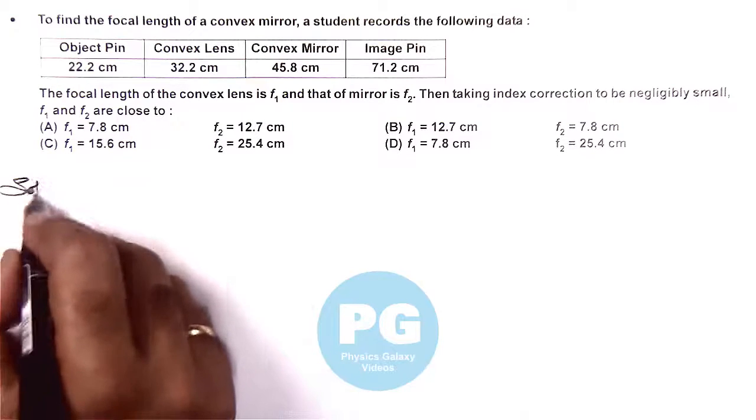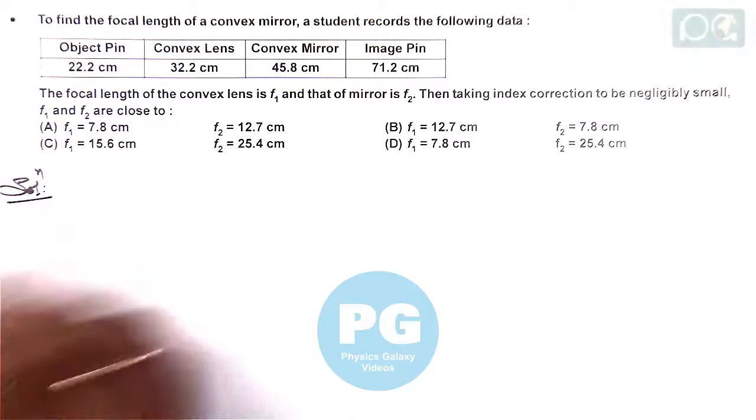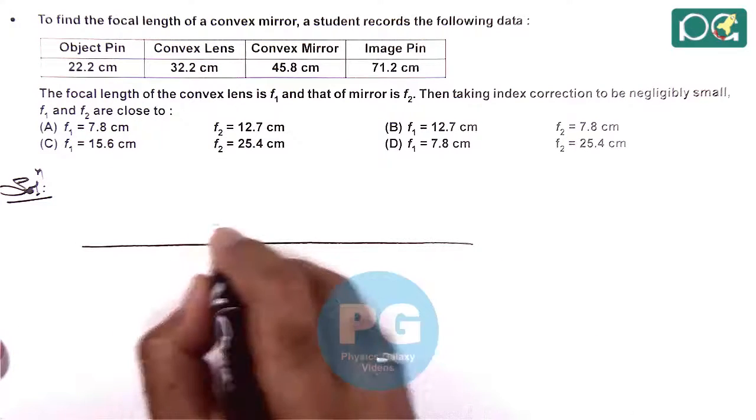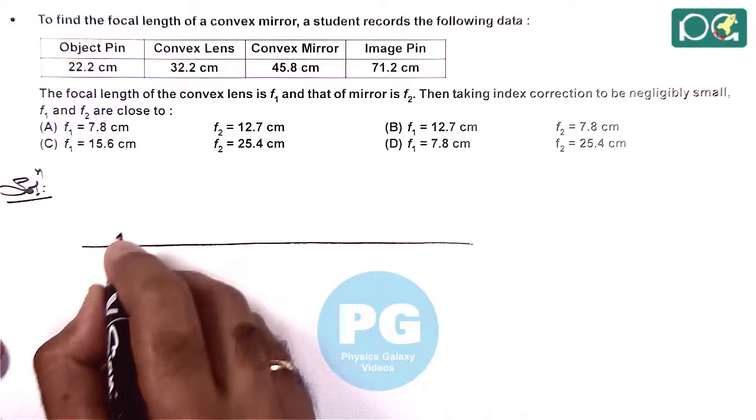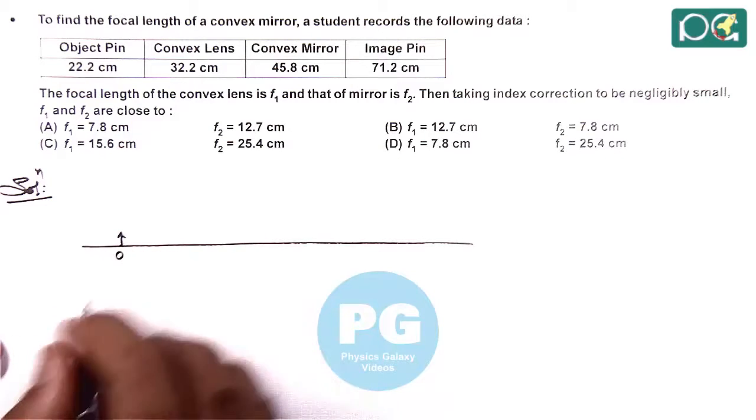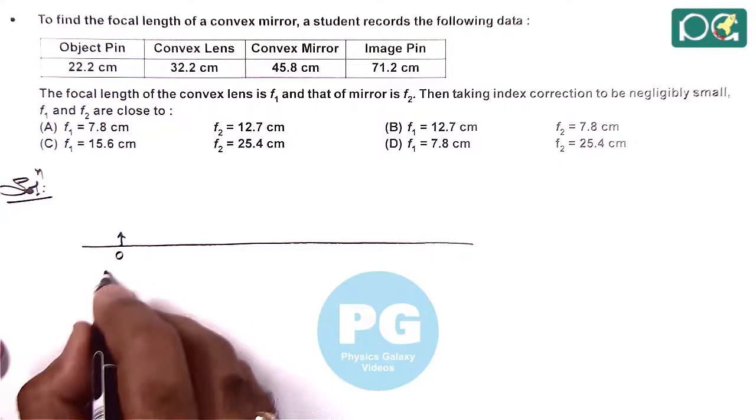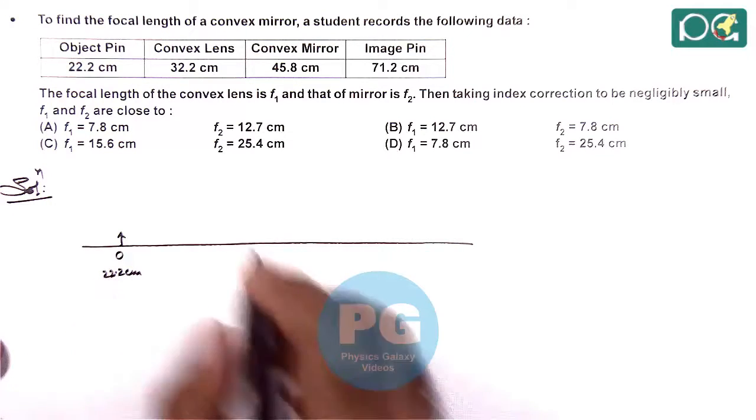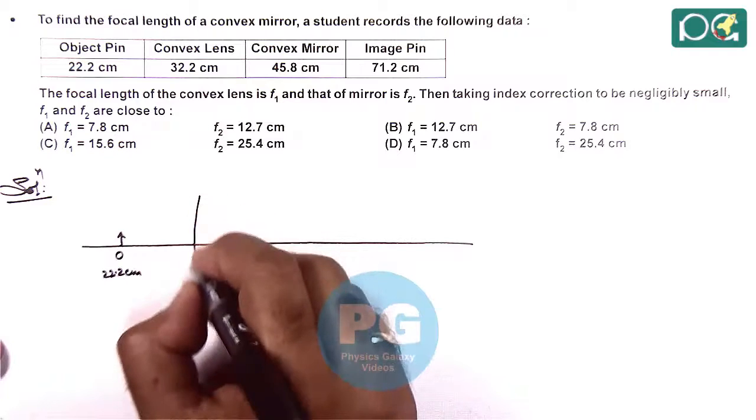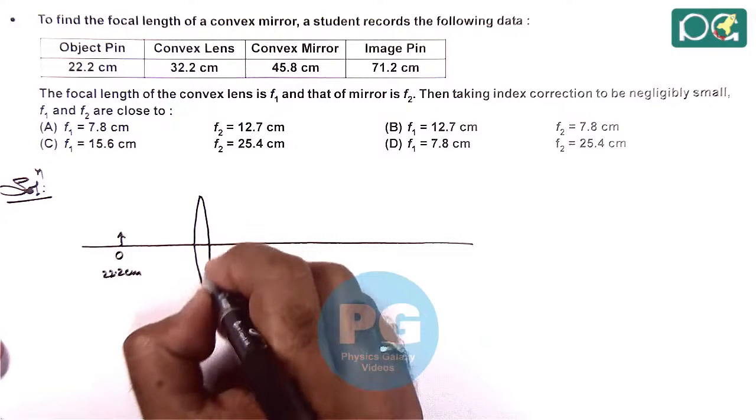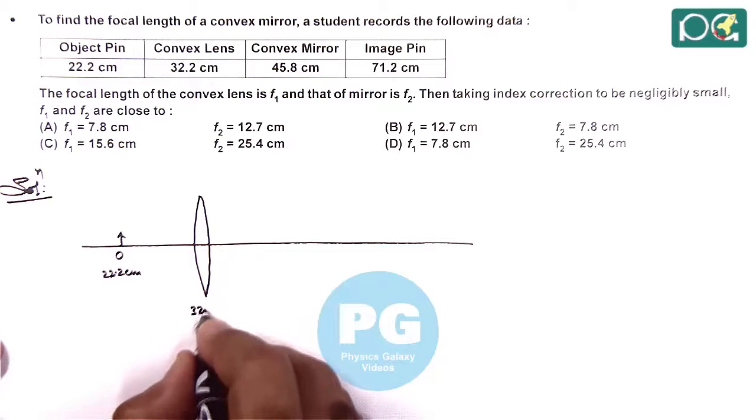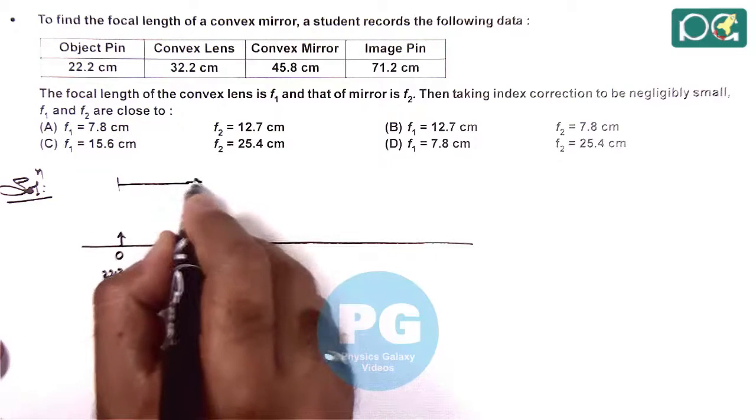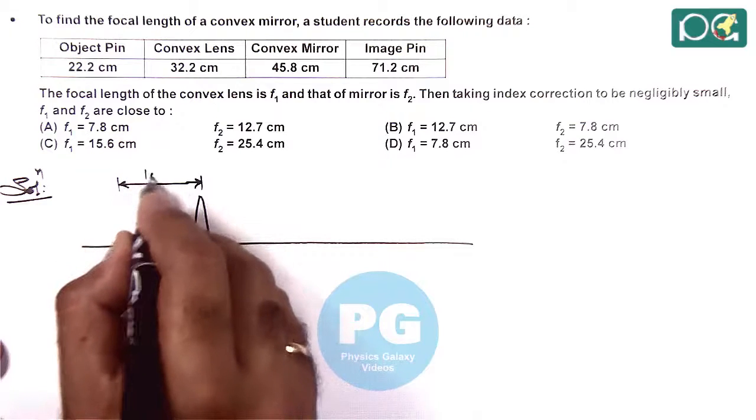First, we try to visualize the situation on the optical bench. We are given that object pin is obtained at the location of 22.2 centimeter, then convex lens is placed at the location of 32.2 centimeter. That means the separation between object and convex lens is 10 centimeter.